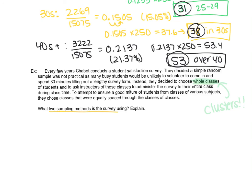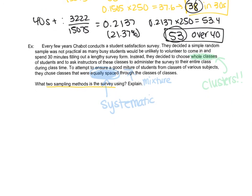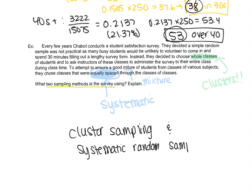And then to attempt to ensure we have a good mixture of students from classes of various subjects, we equally space them throughout the class schedules. So equally spaced, we may or may not remember, but that was the systematic method. So that could be equally spaced in terms of time, like every four hours. It could also be equally spaced just in the catalog, like classes, so that we get all the subjects, but it's equally spaced. So the two methods here are cluster sampling and systematic random sampling. So sometimes we use more than one method. All right, thanks for listening. Email any questions.